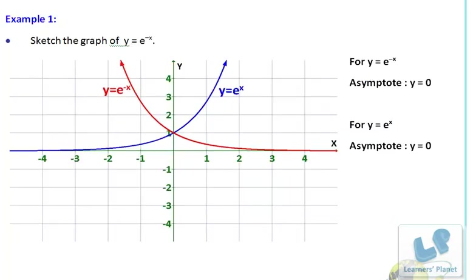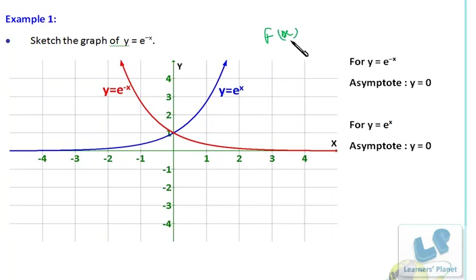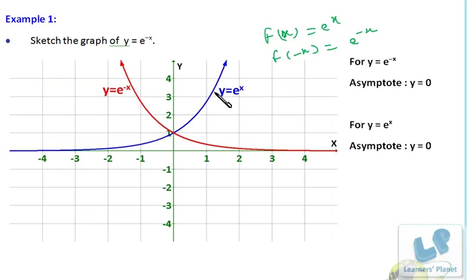Here we are drawing the graph of y = e^(-x). To draw this, you must be clear with the graph of e^x — the blue line represents e^x. Since f(x) = e^x, f(-x) = e^(-x). So you have to take the mirror image of e^x, turning it around along the y-axis. This graph is the mirror image of that graph.